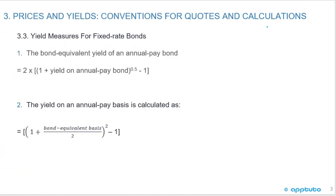Looking at yield measures for fixed rate bonds, there are two formulas that must be memorized. The first formula is the bond equivalent yield of an annual pay bond: 2 times bracket 1 plus the yield on an annual pay bond to the power of 0.5, minus 1. The second formula is the yield on an annual pay basis: bracket 1 plus the bond equivalent basis divided by 2, to the power of 2, minus 1.